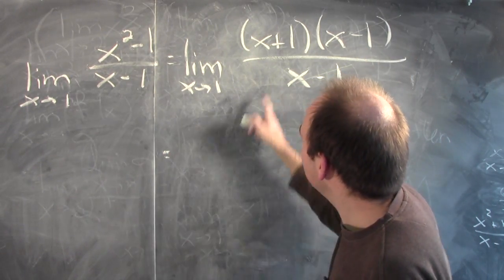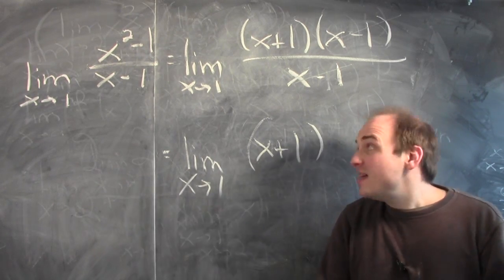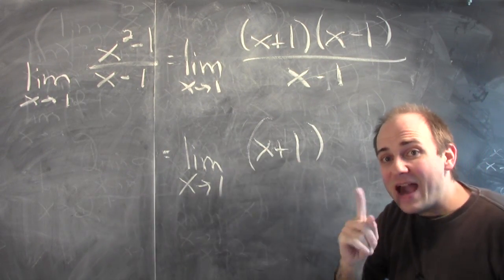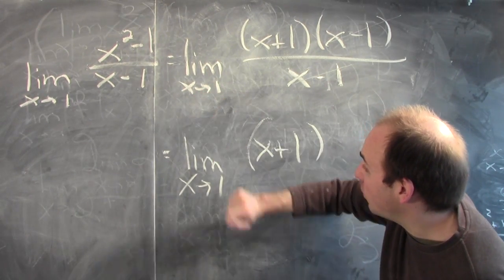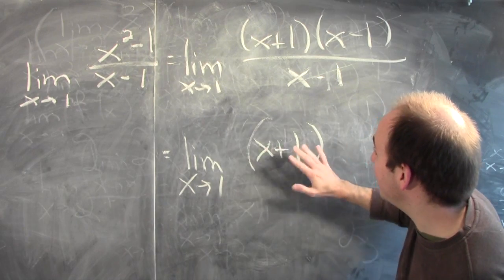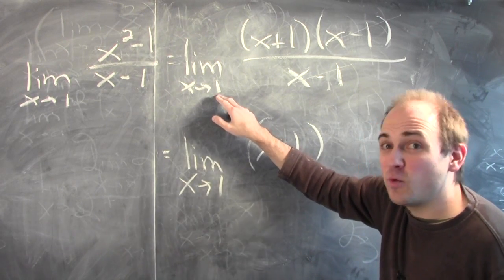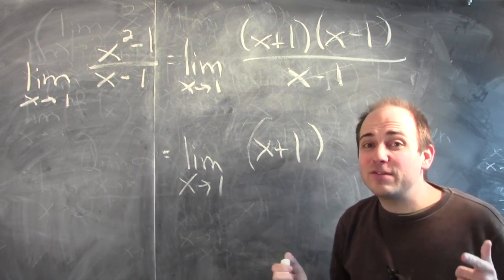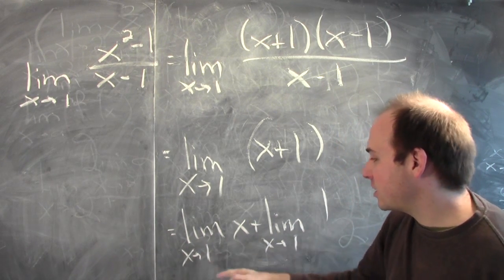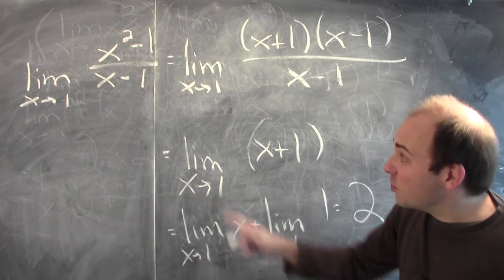I can cancel the x minus 1 factors, giving the limit of x plus 1 as x goes to 1. Note that x squared minus 1 over x minus 1 and x plus 1 are not actually the same function — the original is undefined at 1, while x plus 1 is defined there. But the limit doesn't care: it only depends on values near 1, not at 1. Near 1, these two expressions are exactly equal, so their limits are the same. Now applying the sum rule: the limit of x plus the limit of 1 as x approaches 1 gives 1 plus 1, which equals 2. Our limit laws have saved the day.